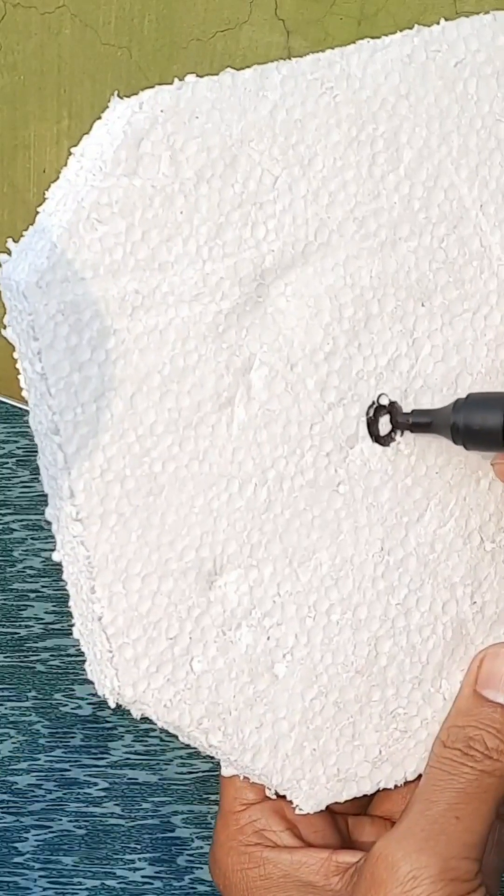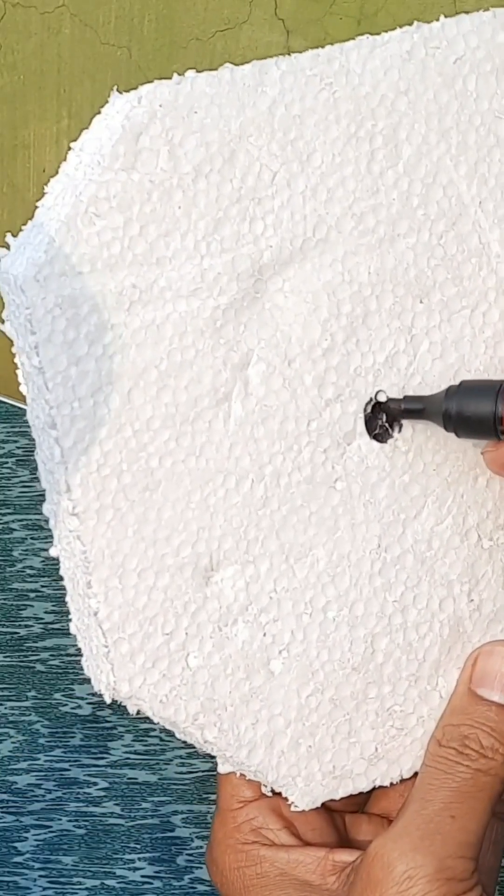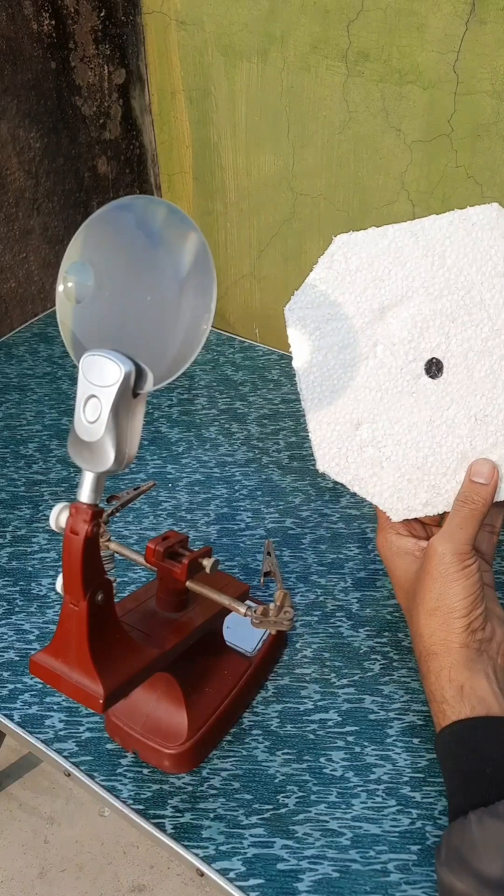We black it with a marker. Then you can see the thermocol.